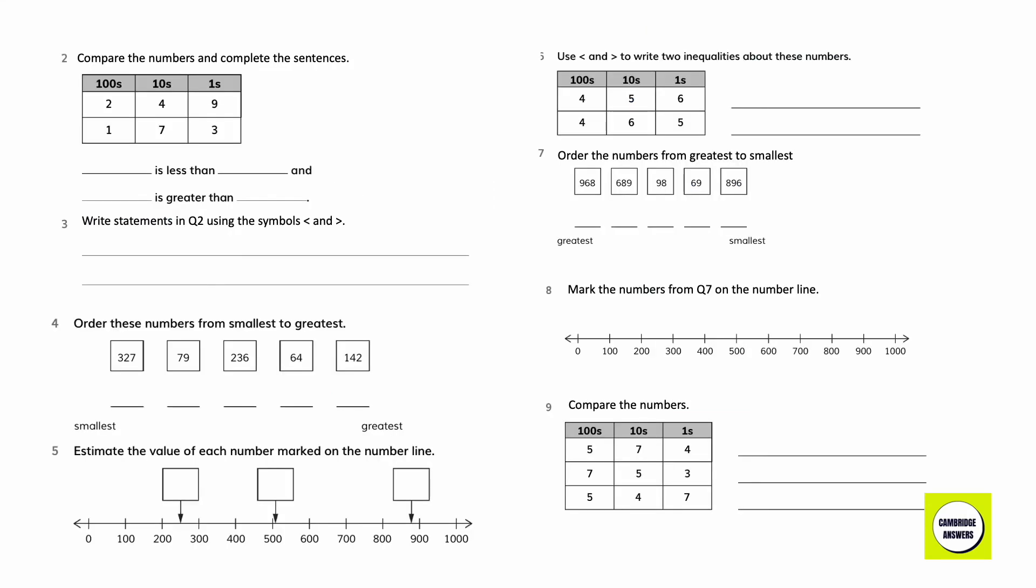Compare these numbers and complete the sentences. An easy way to remember the greater than and less than symbols is to tell the children that the symbols is the mouth of a crocodile and it is always open towards the bigger number to eat the largest meal. 173 is less than 249. 249 is greater than 173. Write the statements in question 2 using the symbols. 173 is less than 249, 249 is greater than 173.